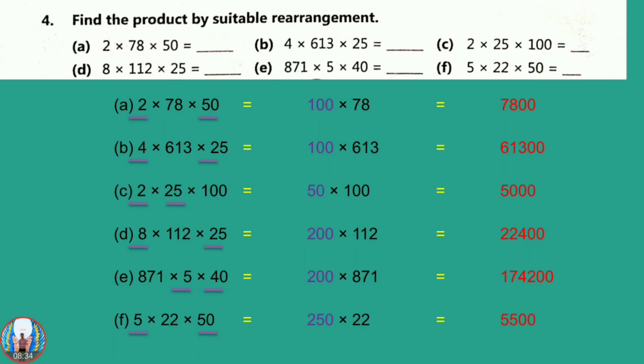Question number F: 5 into 22 into 50. We will multiply 50 into 5, that is 250. Then 250 into 22 gives 5,500.